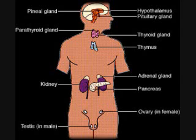Progesterone. Gland: Ovaries. Function: to stimulate the development of female sex characteristics and to help regulate the menstrual cycle.